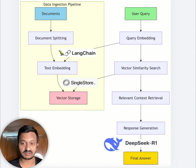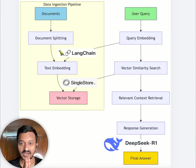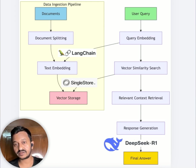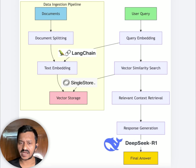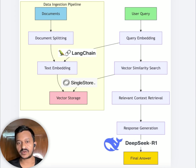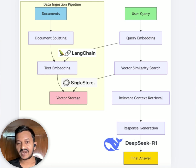Today's video is all about showing you how we can build a retrieval augmented generation system using DeepSeek R1 and LangChain. LangChain is an open source LLM framework to help you build LLM-powered applications. And we're going to use SingleStore as a vector database.